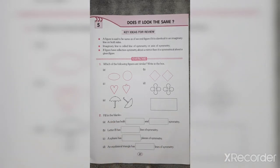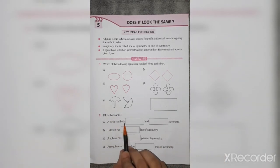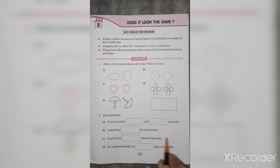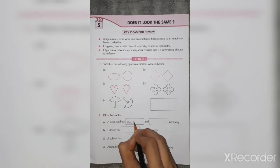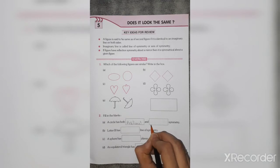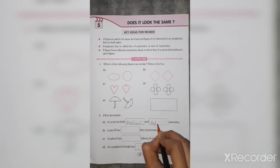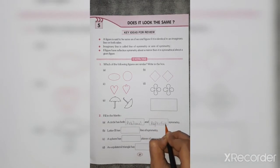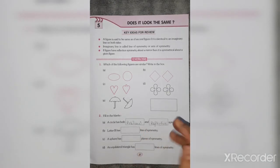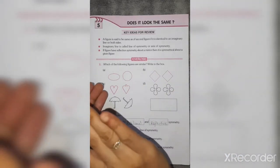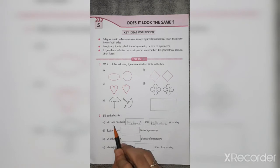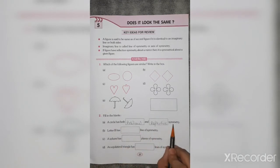Question 2: Fill in the blanks. A circle has both dash and dash symmetry. There are two types of symmetry: rotation and reflection. Rotation means to rotate in this way, and reflection means to flip. So a circle has both rotational and reflective symmetry.